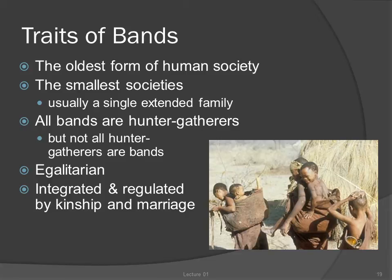The simplest form of culture is the band. Bands are, on the basis of archaeological evidence, the oldest form of human society. All band societies are hunter-gatherers, but not all hunter-gatherers are bands. Bands are small, usually a single extended family, tied to other extended families through intermarriage.